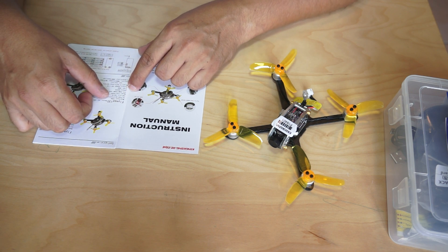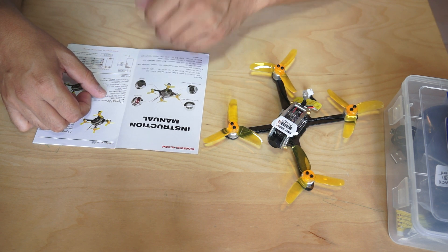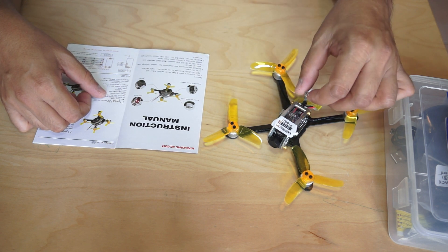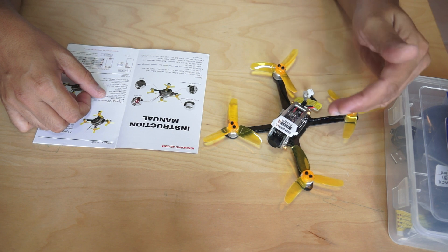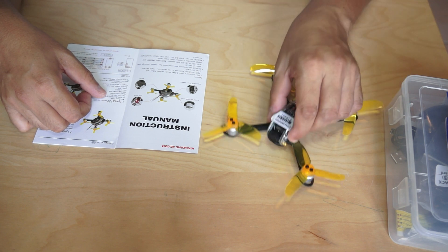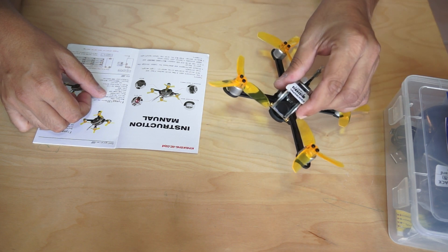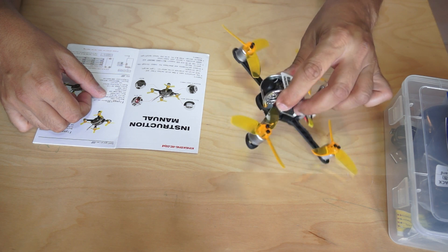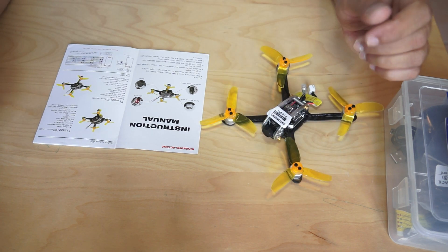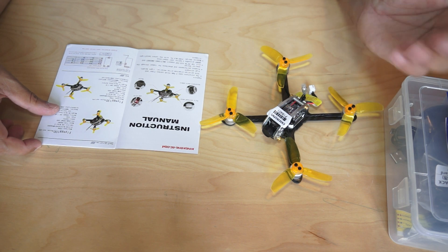1105 7000kV motors. Video transmitter is a 5.8GHz 25 milliwatt which you can also switch to 100 milliwatt and it's only 16 channel. The camera installed here is an 800 TV line camera and of course the angle of the camera is adjustable. Propellers are 2840 and battery I have already shown you.